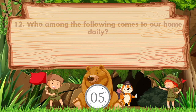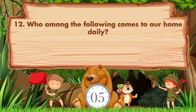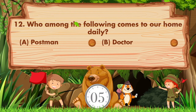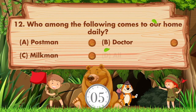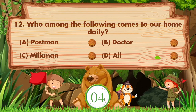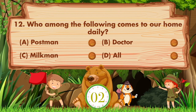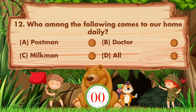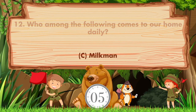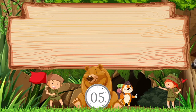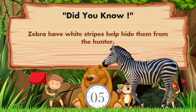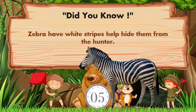Who among the following comes to our home daily? Option A: postman, B: doctor, C: milkman, D: all. Answer is option C, milkman. Did you know zebra's white stripes help hide them from hunters?